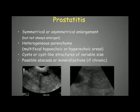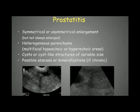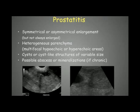Cysts greater than one centimeter may represent abscesses. We can also see mineralizations, but only if the prostatitis is chronic. In this example we see mineralization within the prostate in a case of prostatitis with abscess — signs of chronic disease. The surroundings of the prostate are not clear; it is surrounded by a hypoechoic region and hypoechoic fat, indicating inflammation around the prostate.